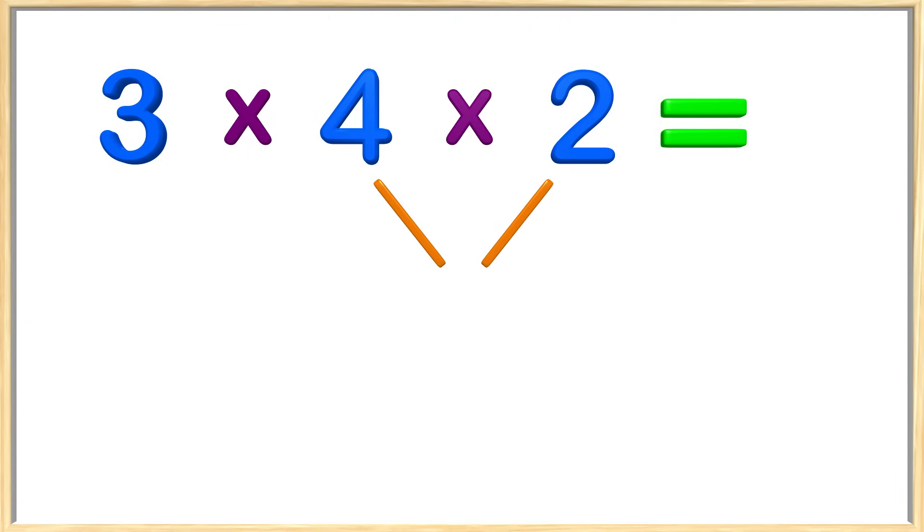I want to start by multiplying four and two. This gives us eight. Now we have eight multiplied by three. What is eight multiplied by three? The answer is twenty-four. Great job!